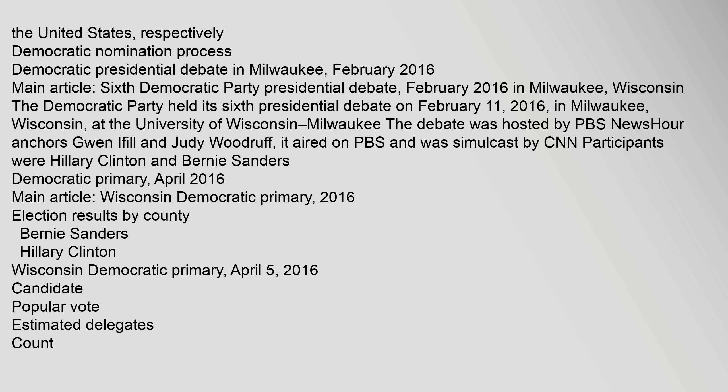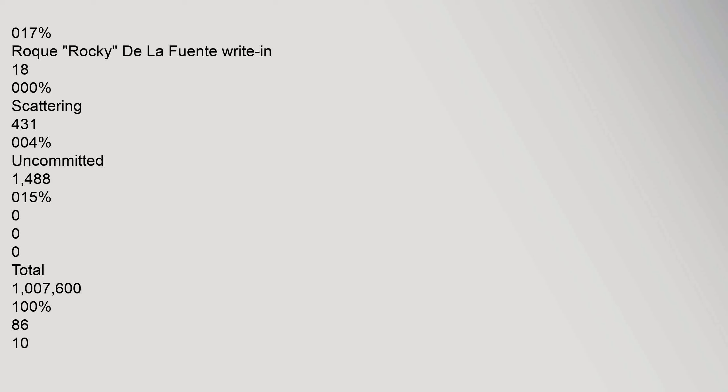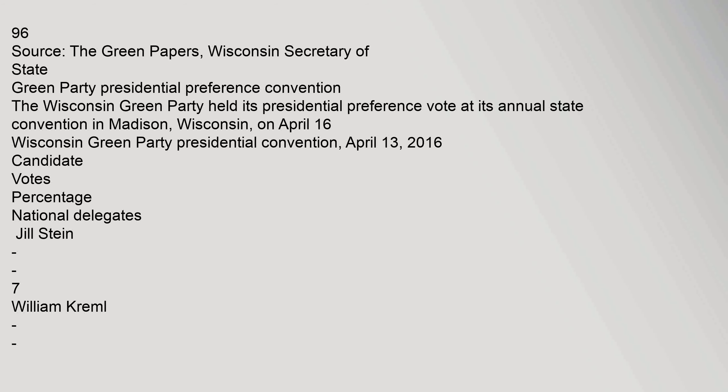The debate aired on PBS and was simulcast by CNN. Participants were Hillary Clinton and Bernie Sanders. Democratic primary, April 2016 election results by county: Bernie Sanders 570,192 votes (56.59%), Hillary Clinton 433,739 votes (43.05%), Martin O'Malley withdrawn 1,732 (0.17%), Roque de la Fuente write-in 18 (0.00%), uncommitted 1,488 (0.15%). Total 1,007,600 votes, 100%. Source: The Green Papers, Wisconsin Secretary of State.